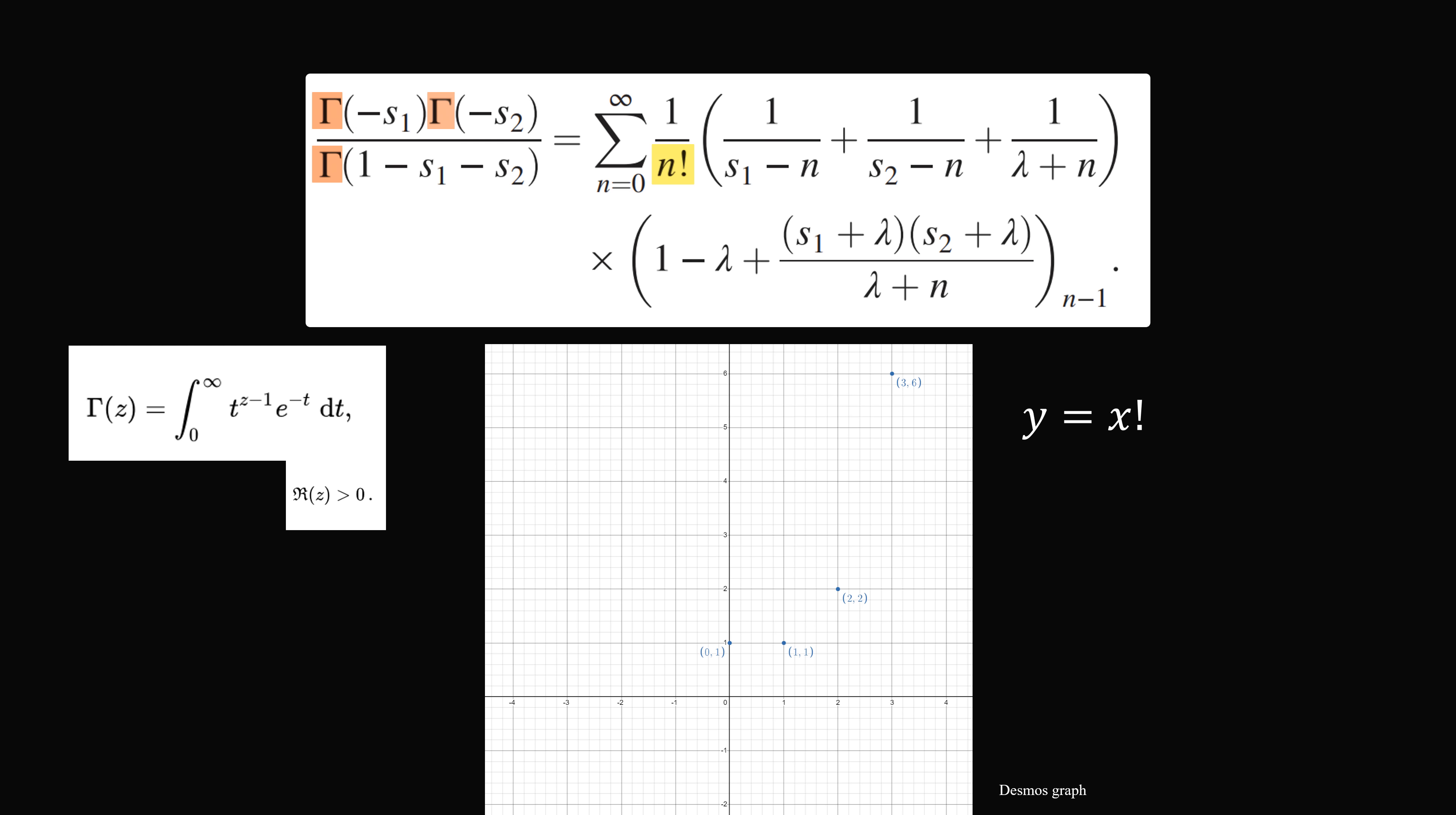The gamma function is defined by the following integral. And for certain whole values of positive numbers, we have gamma of n is equal to n minus 1 factorial.